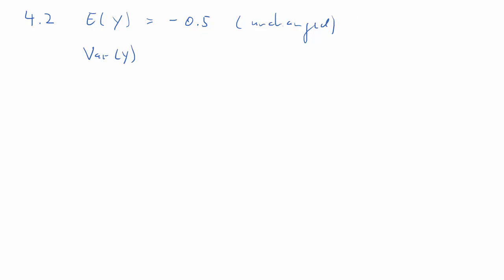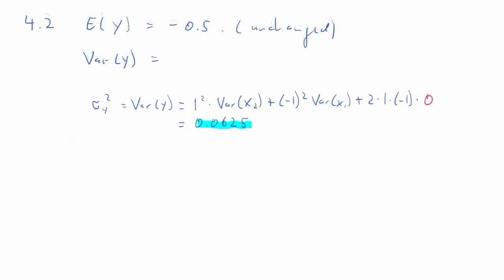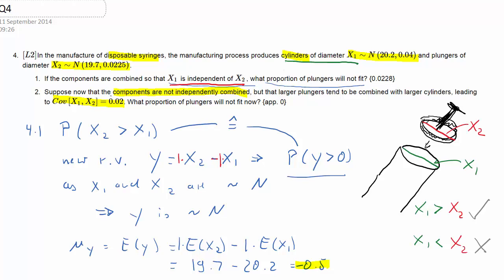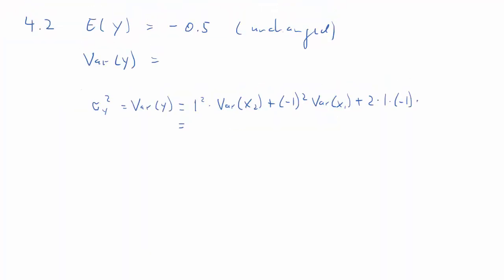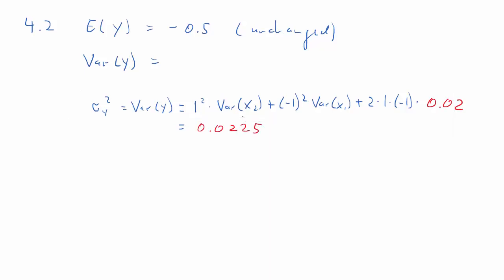The variance of Y, however, is now going to change, because that covariance term isn't going to disappear. This is the calculation we used earlier. Now, for the first part of the question, what's going to change is this 0 back here. So the covariance in our question now is 0.02. So let's use exactly the same formula, just with that new covariance plugged in, 0.02. And we get a new result for the variance of Y, and that is 0.0225.